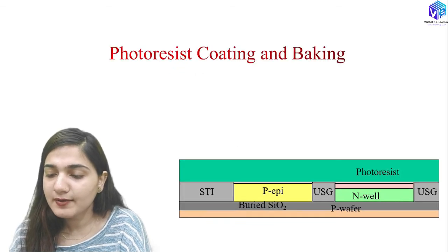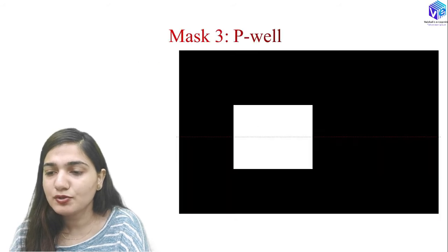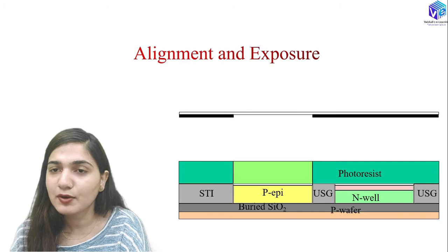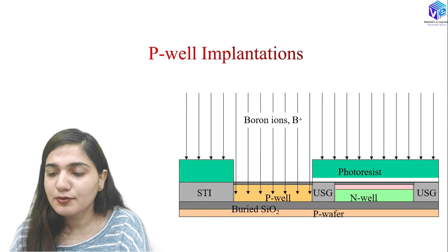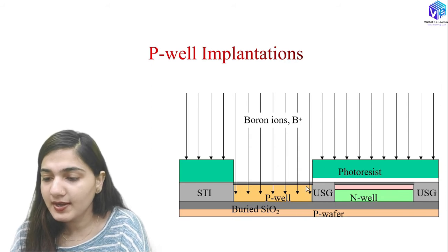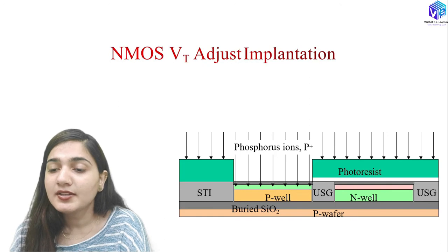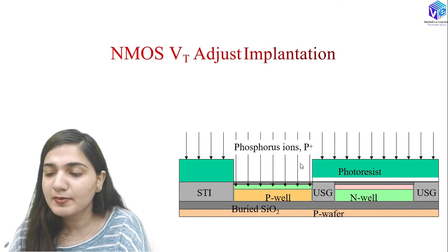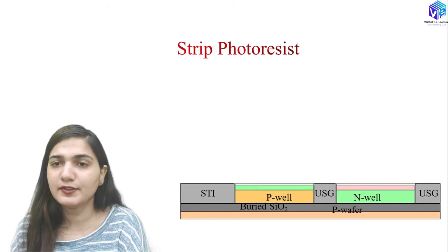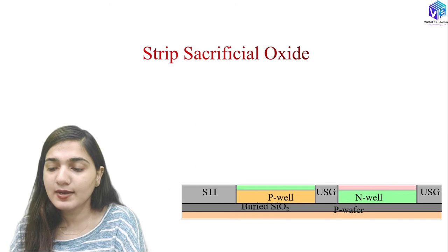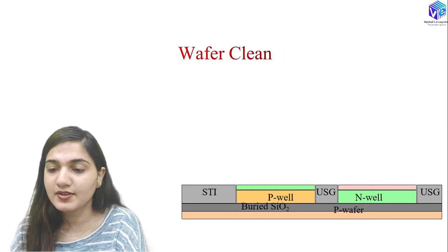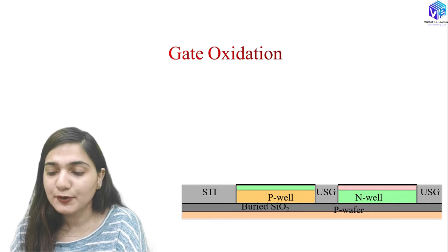After stripping the photoresist, we coat with photoresist again, bake, and use the P-well mask. After alignment, exposure, PEB development, and inspection, boron ions are used for the P-well implantation. Next, NMOS threshold voltage adjustment implantation is done using phosphorus ions. After stripping the photoresist and the sacrificial oxide, we do wafer cleaning, then gate oxidation to form the gate oxide.